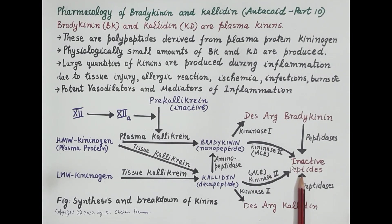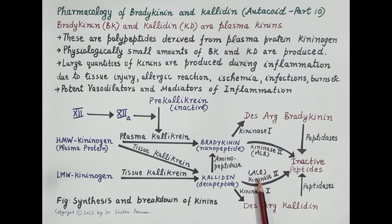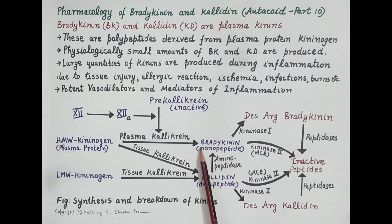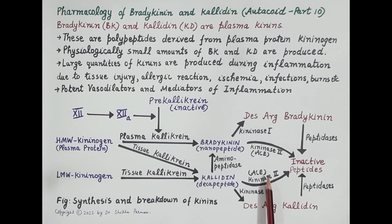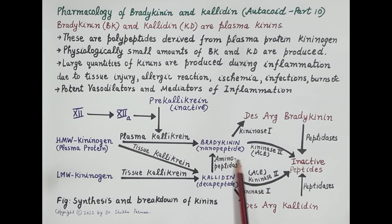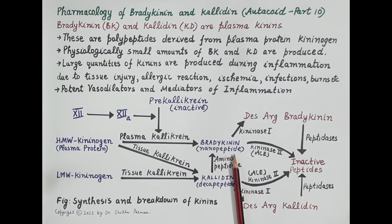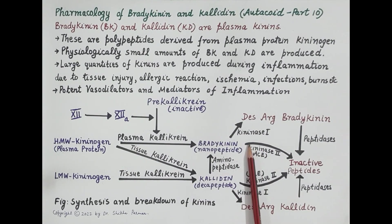It is very important to understand that ACE inhibitors — drugs that inhibit angiotensin converting enzyme — inhibit the breakdown of bradykinin and calidin. So ACE inhibitors cause accumulation or an increase in the level of bradykinin in the body. Increased bradykinin can cause angioedema and dry cough.